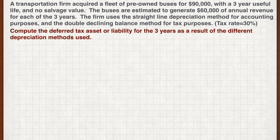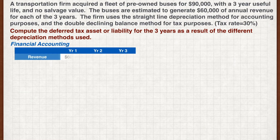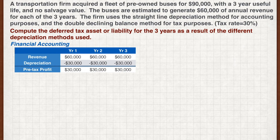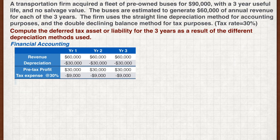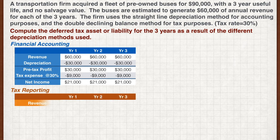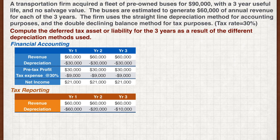Let's start with the long method. For financial accounting, we have $60,000 of revenue each year, and under the straight-line method, the depreciation each year is $30,000. That leaves us with pre-tax profit of $30,000 each year and a tax expense of $9,000 each year. Under tax reporting, the double-declining balance depreciation method is used. Hence, we have $60,000 depreciation in the first year, $20,000 in the second year, and $10,000 in the third.